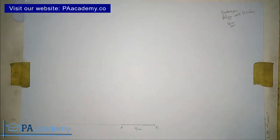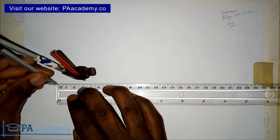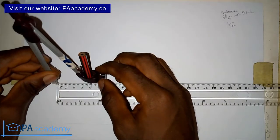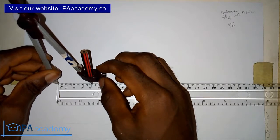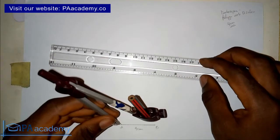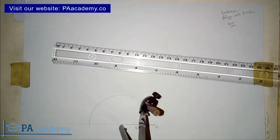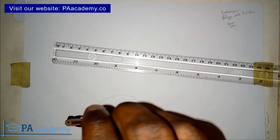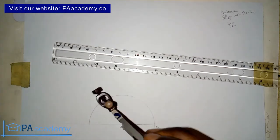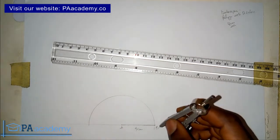The next thing is to bring in your compass and draw a semicircle from point A with the same length as the side — 4 centimeters. Place it on point A and draw a semicircle.